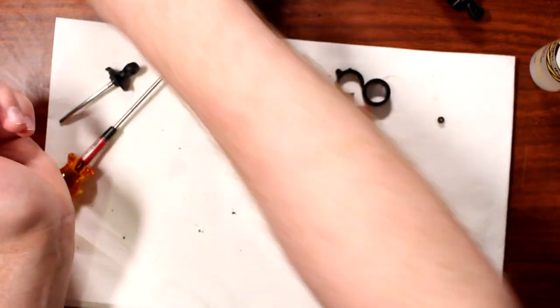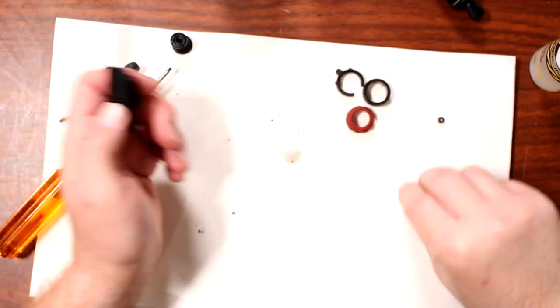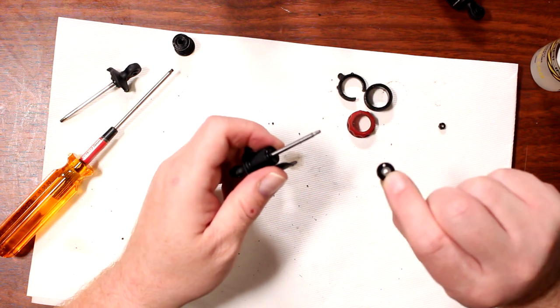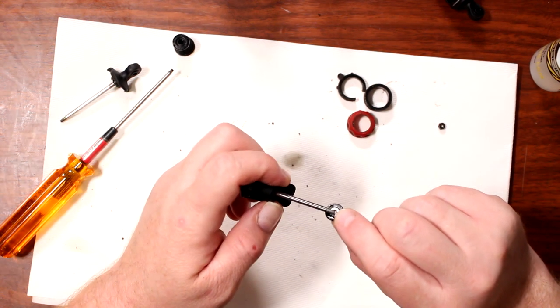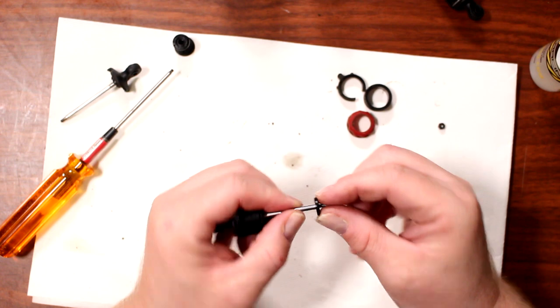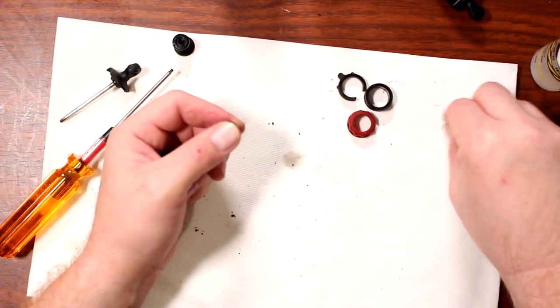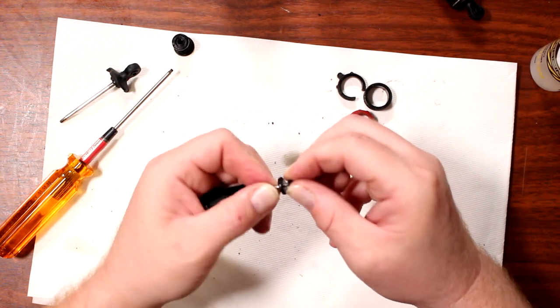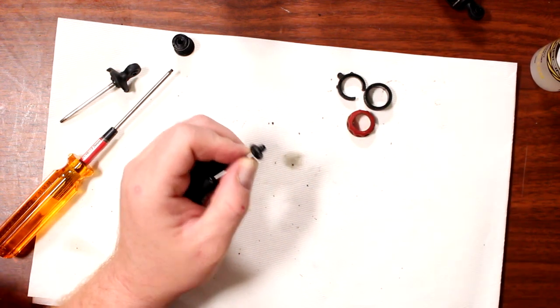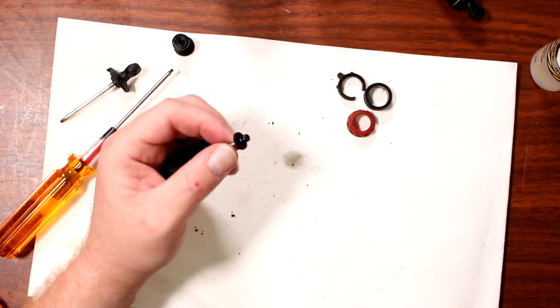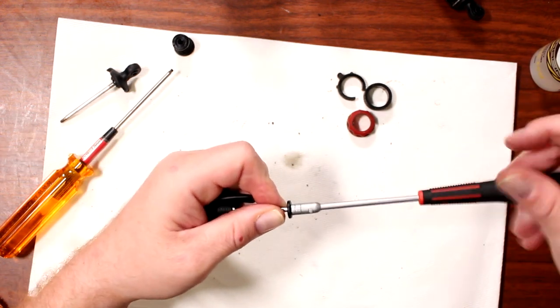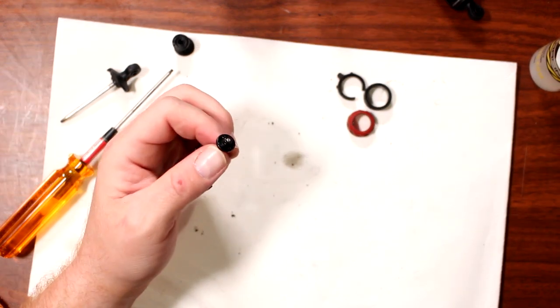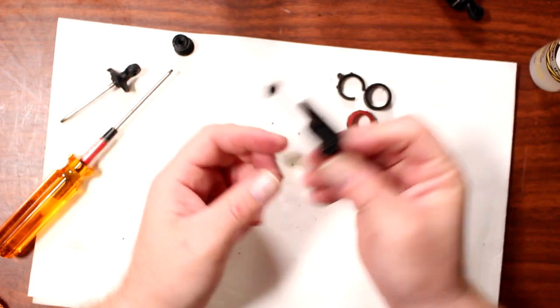Now we're going to grab our shock body, our valve. Make sure the washer stays on the bottom. Grab our cap, or bolt, or nut. And basically we're going to tighten this guy back up until you can't. Don't force it, don't need to. And one parts done.